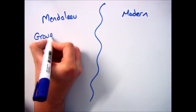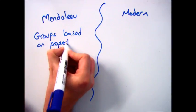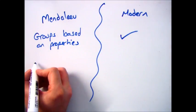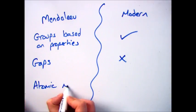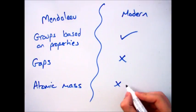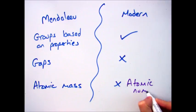So if we start off with how Mendeleev and our periodic table are similar and different. Mendeleev put all the elements into groups based on properties, we do the same. Mendeleev left gaps, we don't have any, and he put his elements in order of atomic mass, we don't, ours is in order of atomic number.